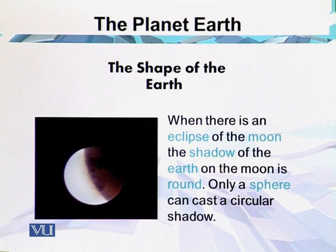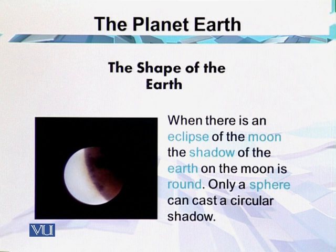When there is an eclipse of the moon, the shadow of the earth on the moon is round. Only a sphere can cast a circular shadow. This is one of the evidences — when we observe a lunar eclipse, the shadow that the earth casts on the moon is a rounded shadow.